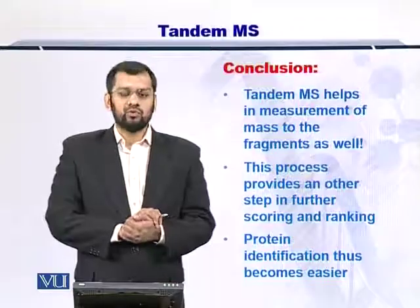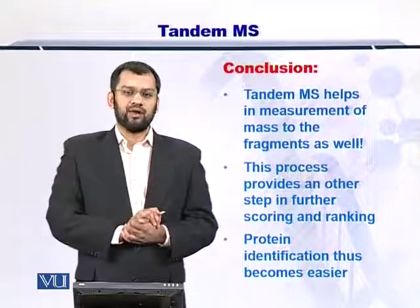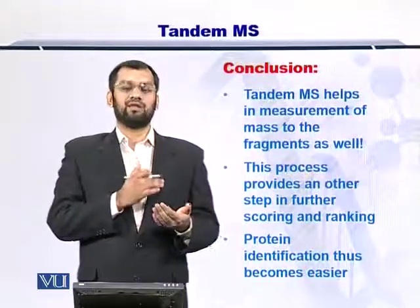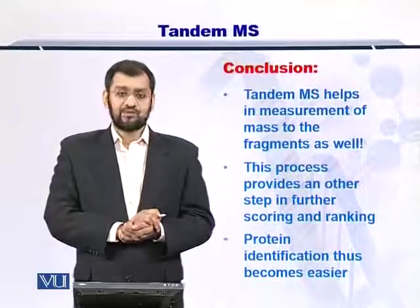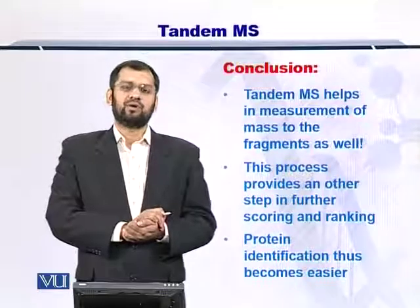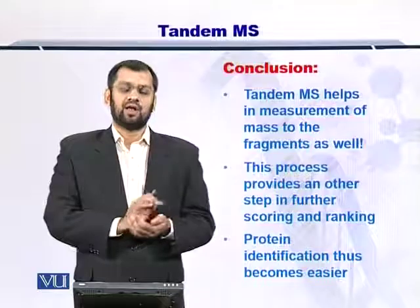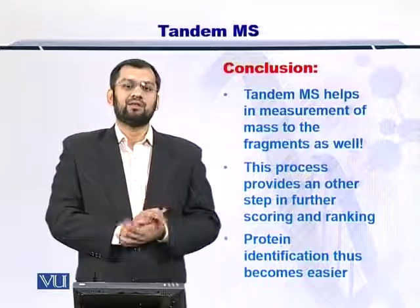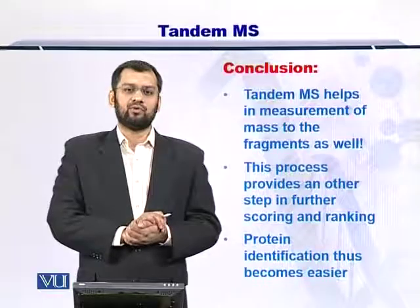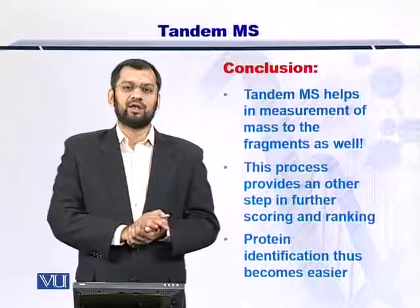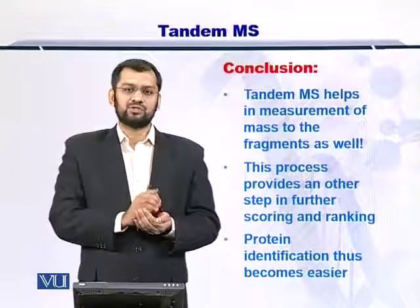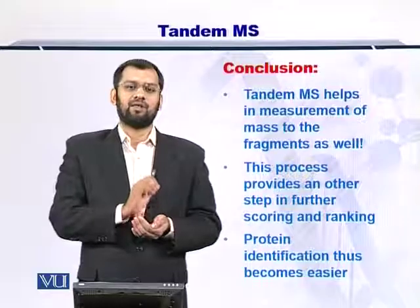To conclude, tandem MS helps you to measure the molecular weight of the peptides that may result from the fragmentation of your intact protein or peptide. This step will help in better identification of proteins which were not being identified accurately through just the MS1 step. This becomes very useful if your protein is an atypical protein and has multiple homologues — therefore, you can also identify specifically which homologue is present in the sample.